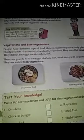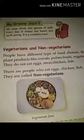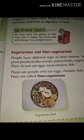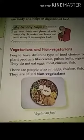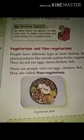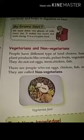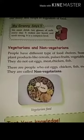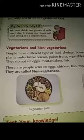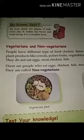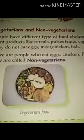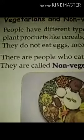Now in part three, we are going to talk about vegetables, vegetarians, and non-vegetarians. As the name suggests, vegetarians don't like to eat meat, chicken, or eggs. Those who like to eat meat, chicken, fish, and eggs along with vegetables are called non-vegetarians.